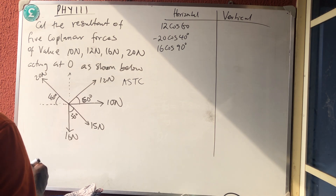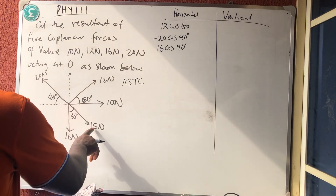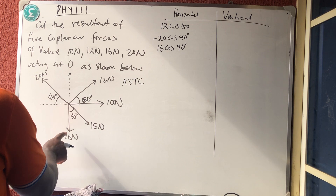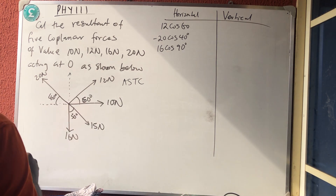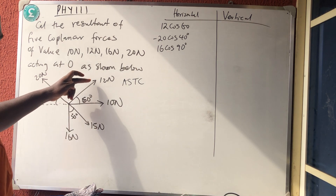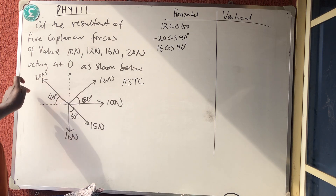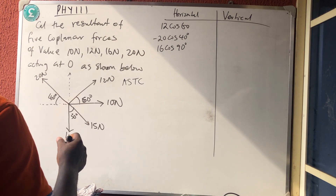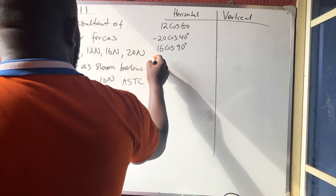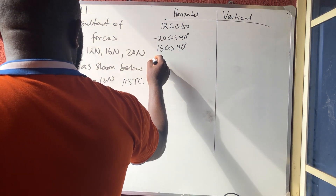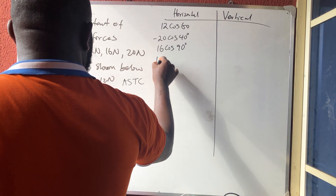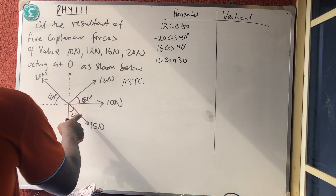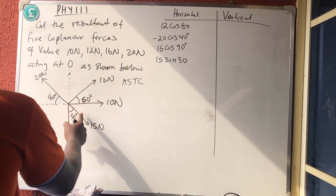The next force is 15 Newtons, moving towards the horizontal direction. Since it is moving away, we use 15 sin 30° and it is away.